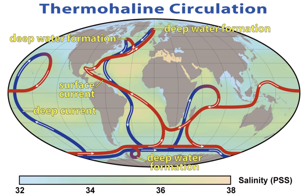Humans first acquired knowledge of the waves and currents of the seas and oceans in prehistoric times. Observations on tides were recorded by Aristotle and Strabo. Early exploration of the oceans was primarily for cartography and mainly limited to its surfaces and the animals that fishermen brought up in nets, though depth soundings by lead line were taken.